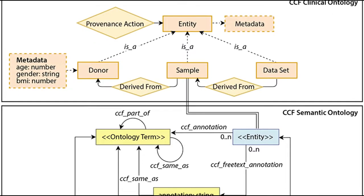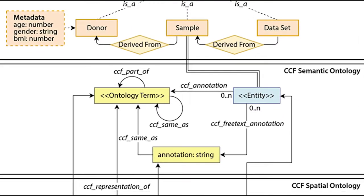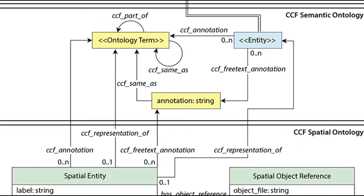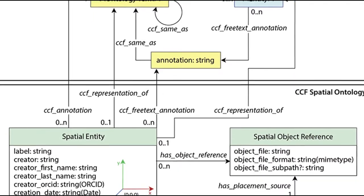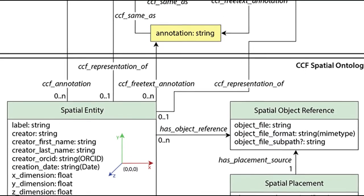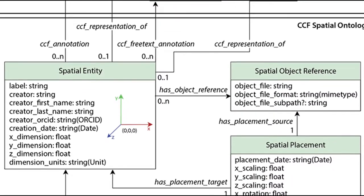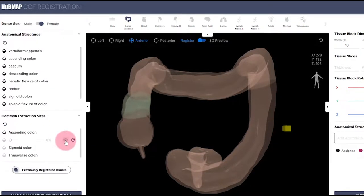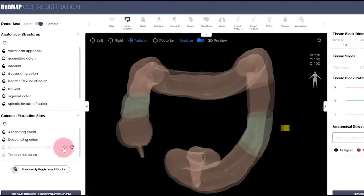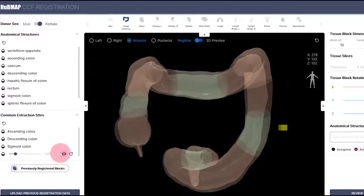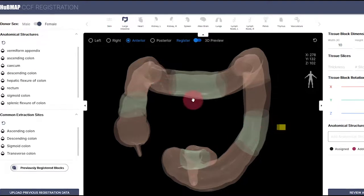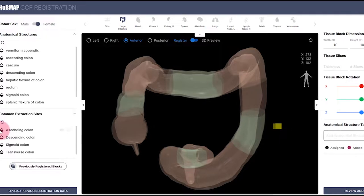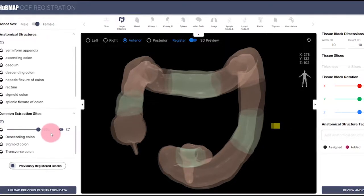The CCF HRA is a computational framework that combines expert-curated ontologies for specimen, biological structure, and spatial data to create an underlying reference map of organs, tissues, and cells in the human body. The RUI and EUI use the CCF HRA to describe collected tissue blocks and biopsies in a standardized way. This enables data harmonization across consortia, donors, organs, and assay types.